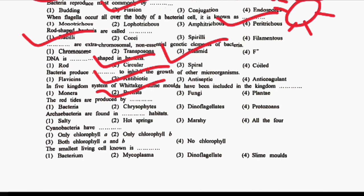Next question: the red tide is produced by DASH. Option 1: Bacteria. Option 2: Chrysophytes. Option 3: Dinoflagellates. Option 4: Protozoa. The correct answer is Option 3, that is Dinoflagellates. Red tides are caused by red Dinoflagellates, for example Gonyaulax.